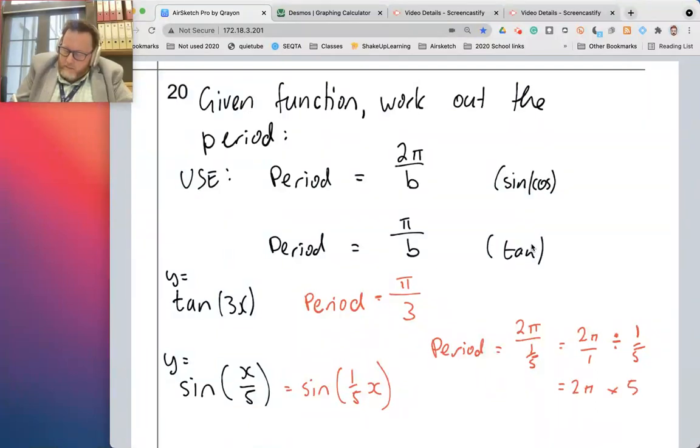So that's going to be 2π times 5 over 1. So that's 10π. So the new period, it's stretched out. The sine graph will go over a period of 10π before it starts repeating. So that's how to do that.